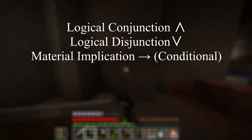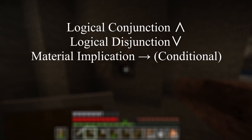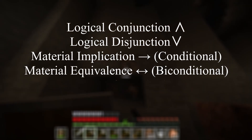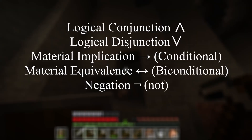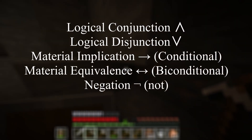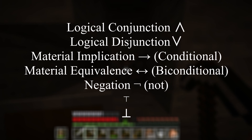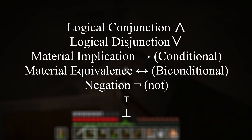We have the logical conjunction, disjunction, material implication (sometimes called conditional), material equivalence (biconditional), and negation. There are also two symbols for true and false. We also use brackets to make things readable and provide context.